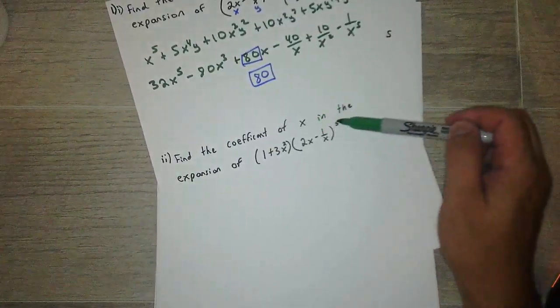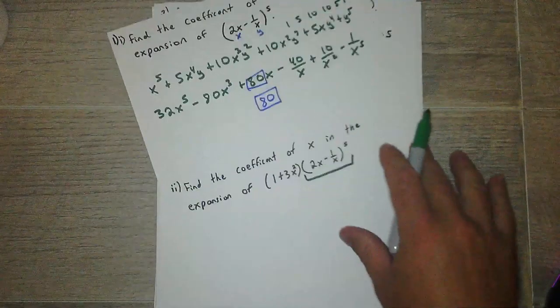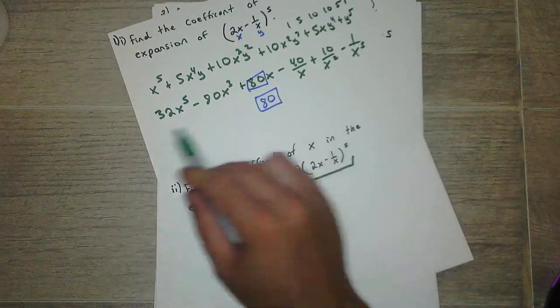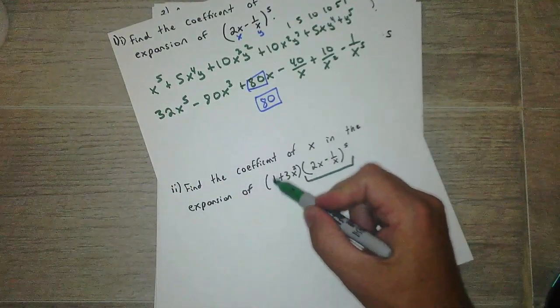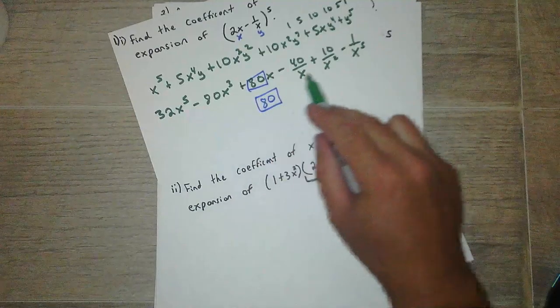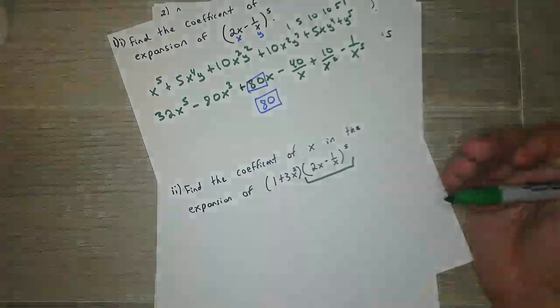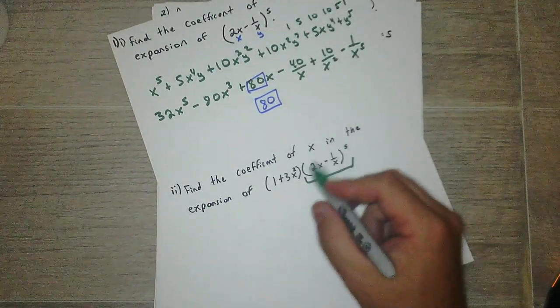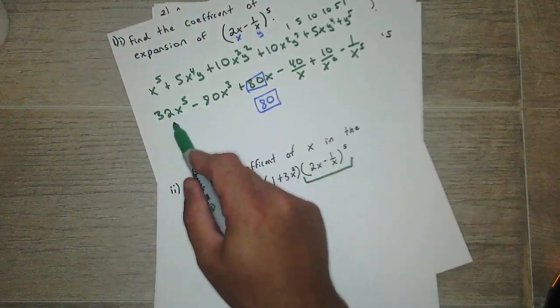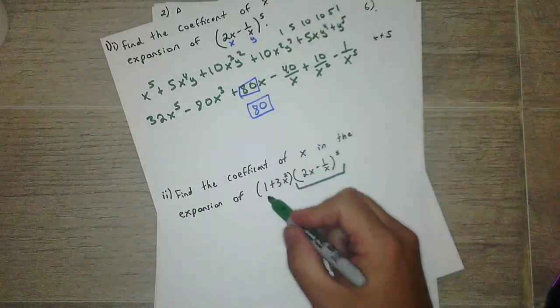Right, now find the coefficient of x in the expansion. So we just did this part up here. So that's what this line here is. Now we're going to multiply it by these two terms. That means after we expanded this out, we distribute the 1 to all of these, and then we distribute this term to all of these. We would get 12 terms if we did that. But we're not going to do that, because all we care about is the one that has x in it. So you're just looking at how the powers of x change. This x^5 and this 1/x^5 are obviously not even going to be close to that.